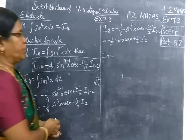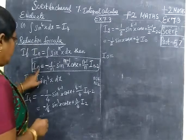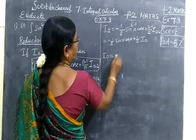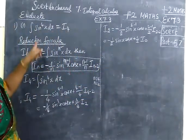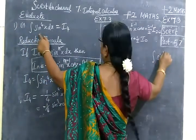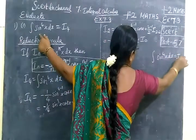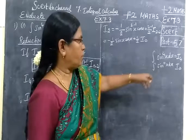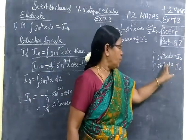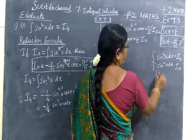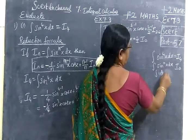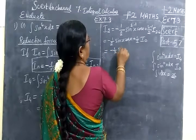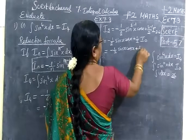The power is reduced. I₀ is what we are calculating. I₀ equal to integral sin power 0x dx. So anything power 0 is 1. So integral 1 dx. So integration of 1 is nothing but x.